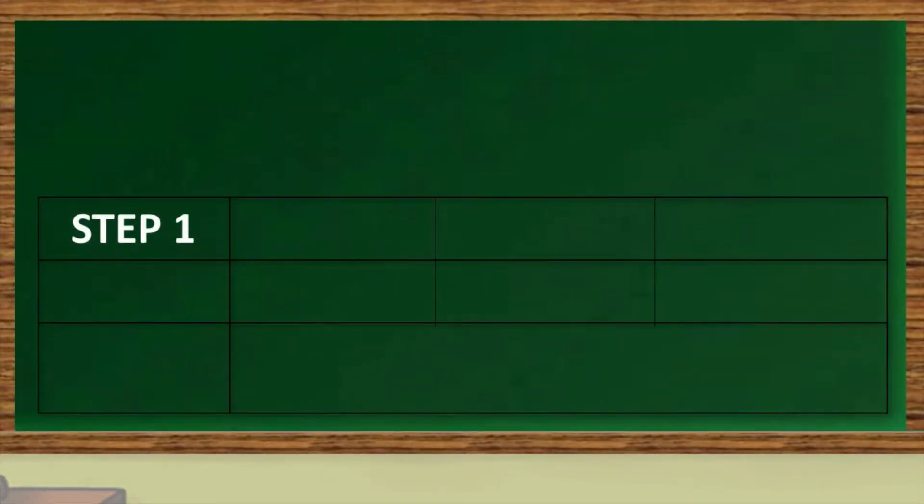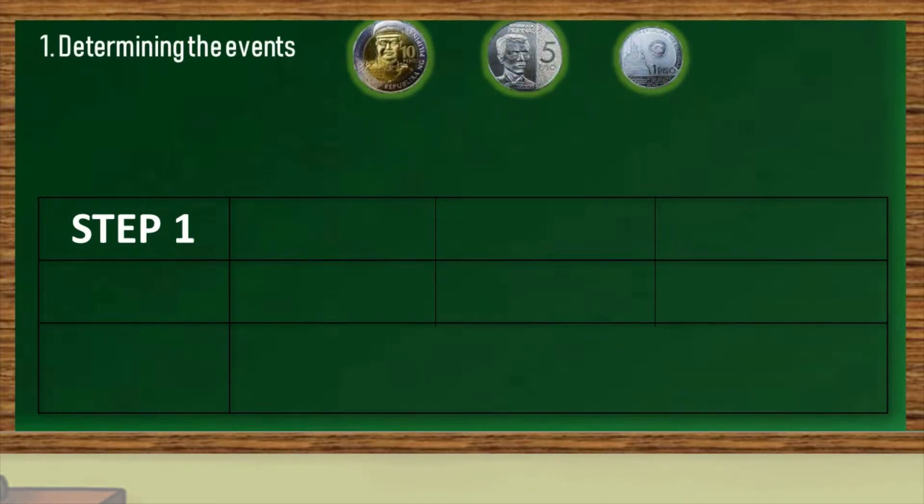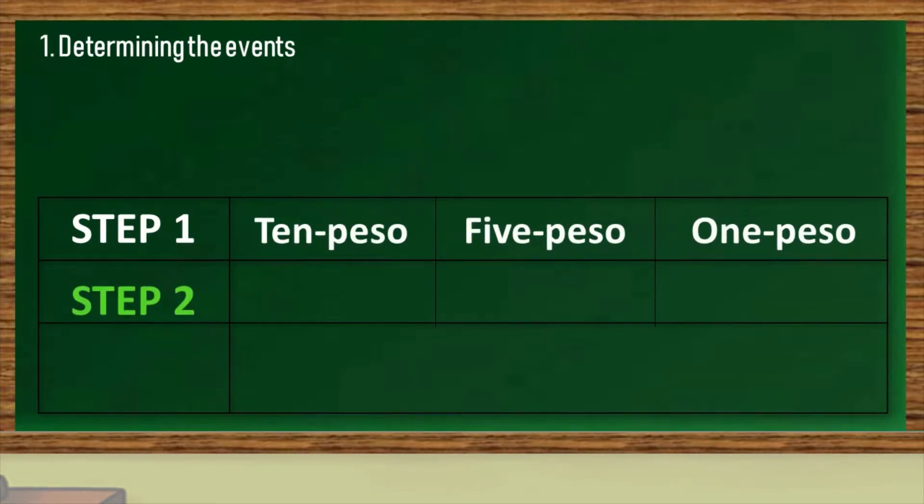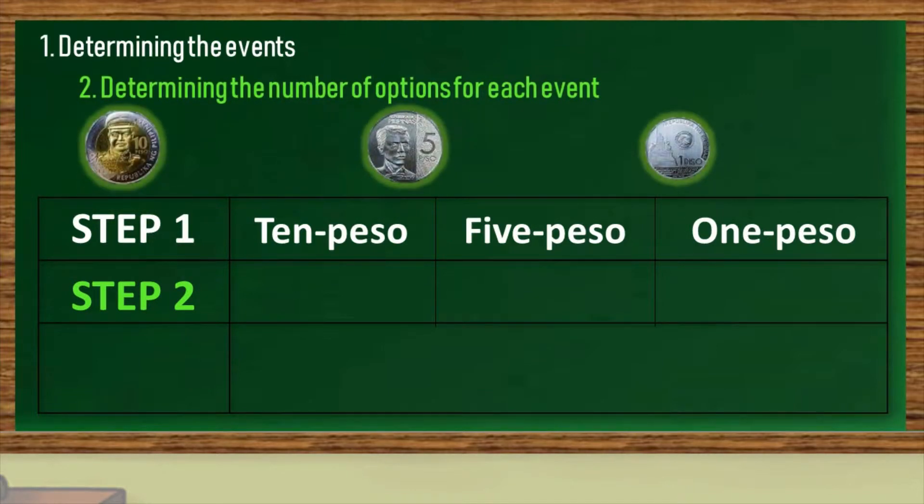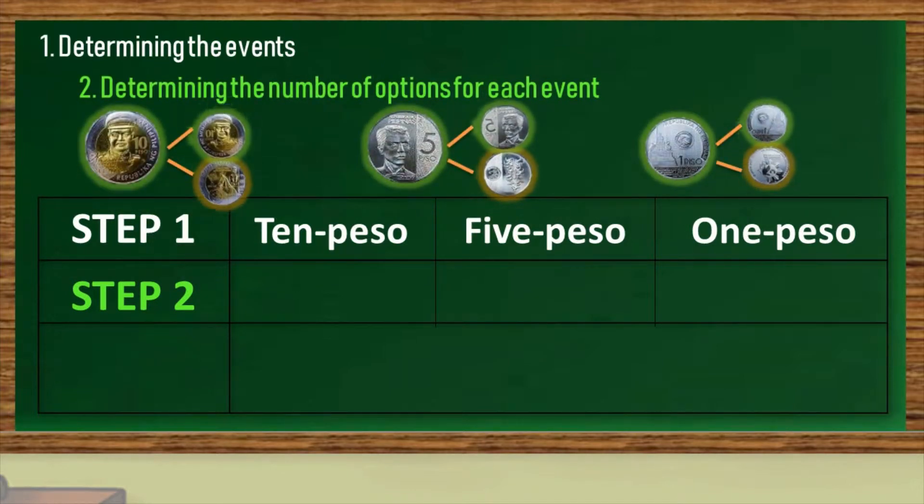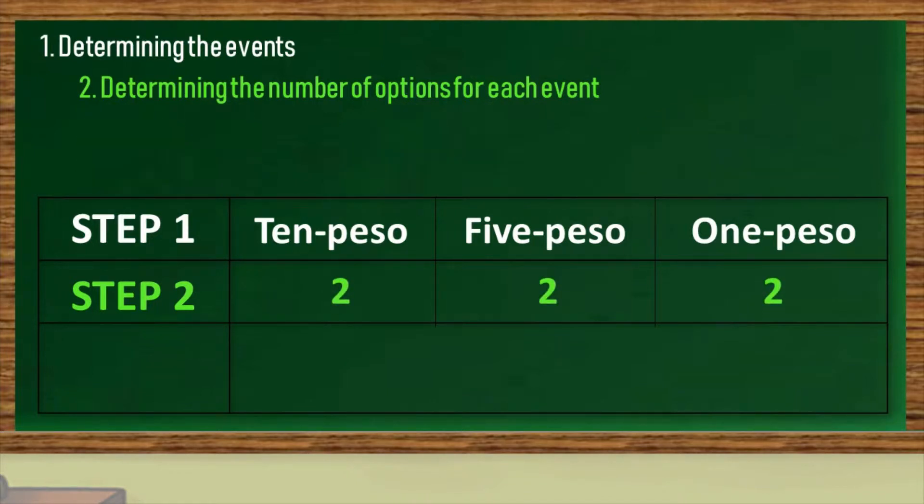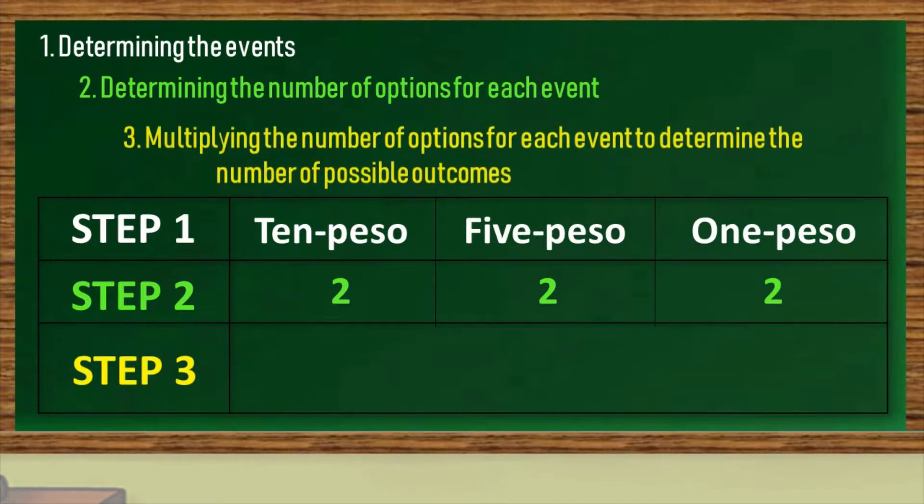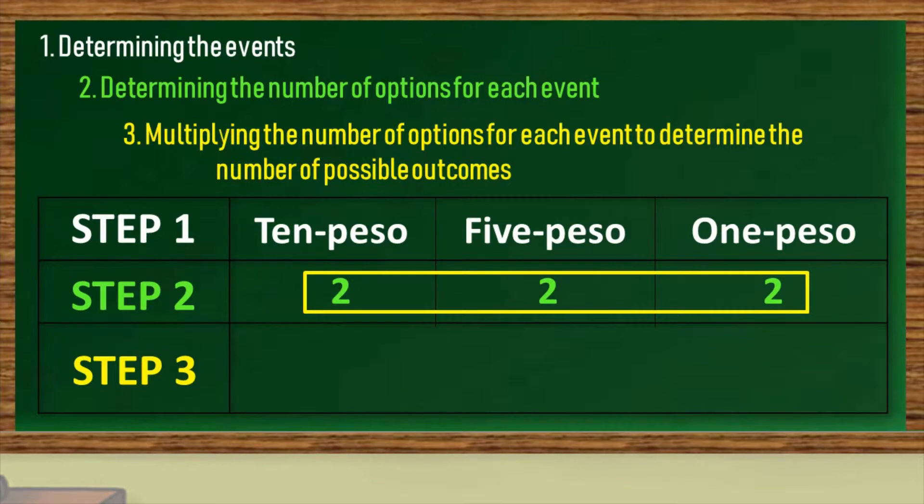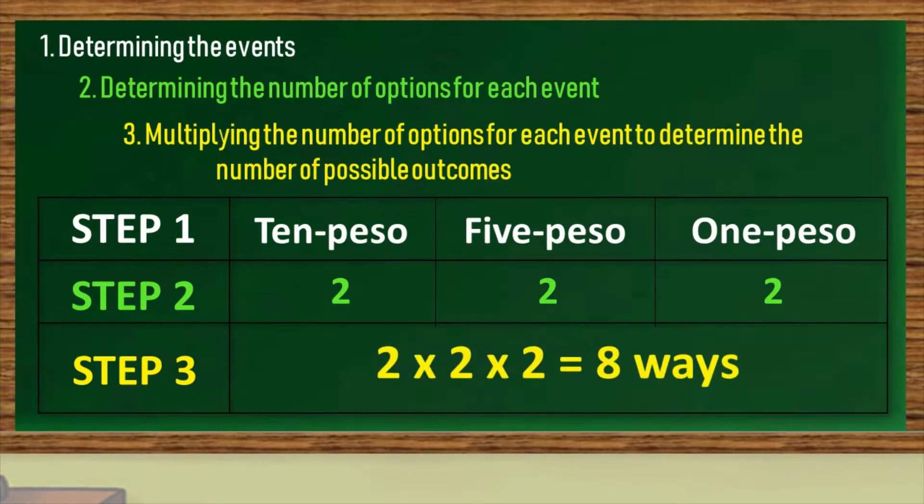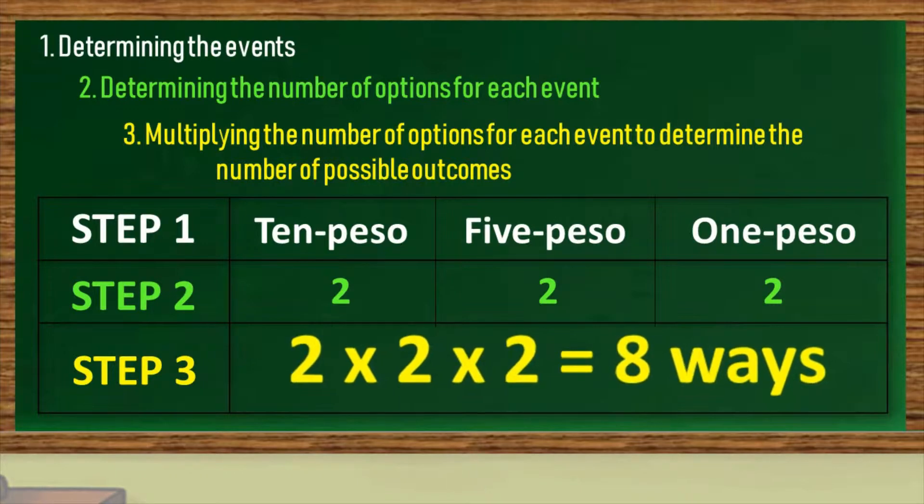Let's follow the 3-step process of fundamental counting principle and let's present the data in a table format. The first step is determining the events. In the situation, the 10, the 5, and the 1 peso coin are the 3 considered events or variables. The second step is determining the number of options for each event, and in this case we only have head and tail as options for each coin, or simply there are two options. And lastly, the third step is multiplying the number of options for each event to determine the number of possible outcomes. Having said, 2 multiply by 2 multiply by 2 to get the total possible ways the coins will fall, which is in 8 ways.